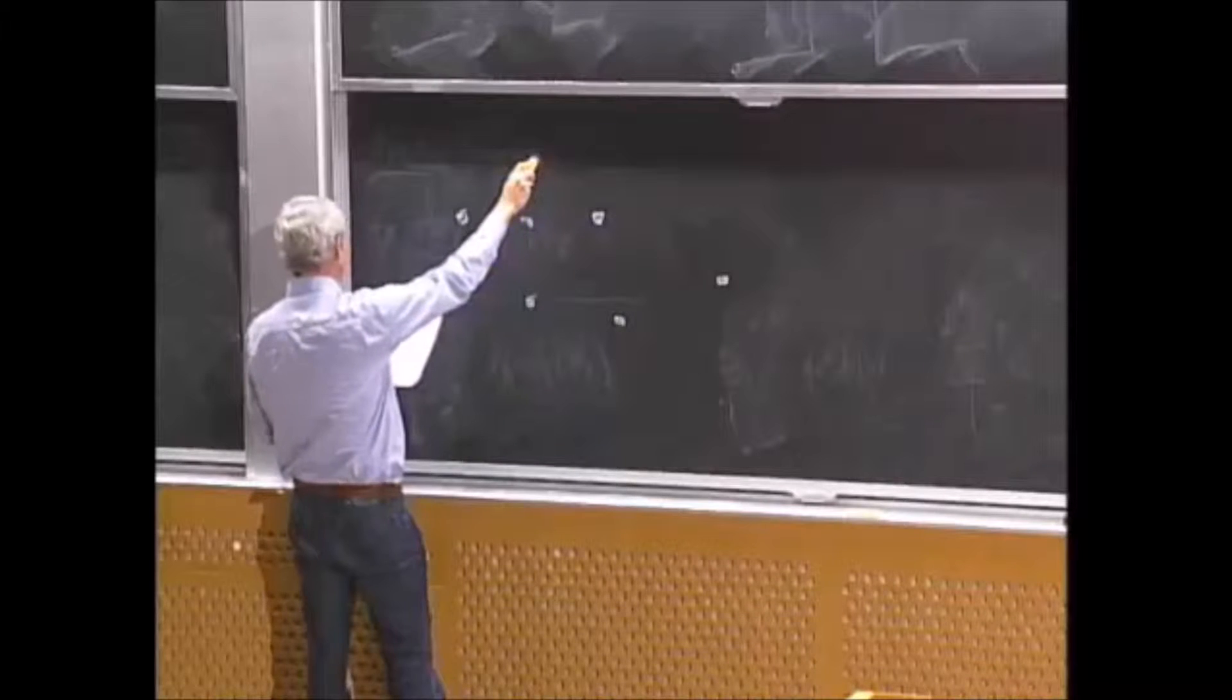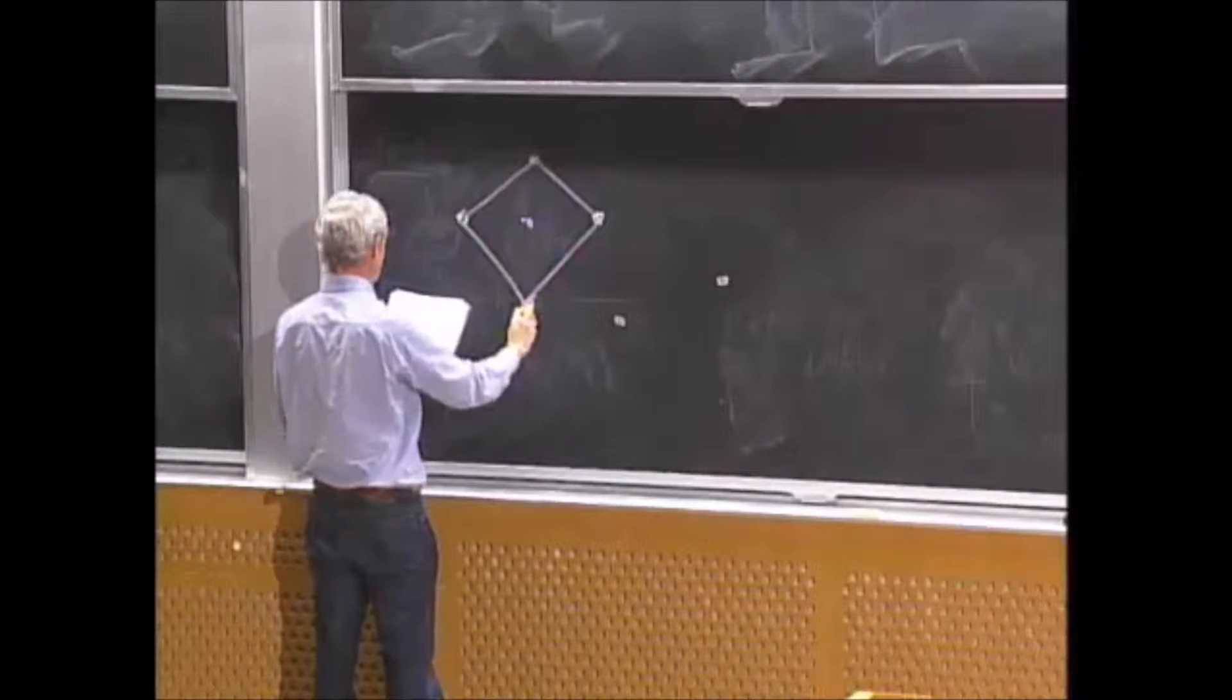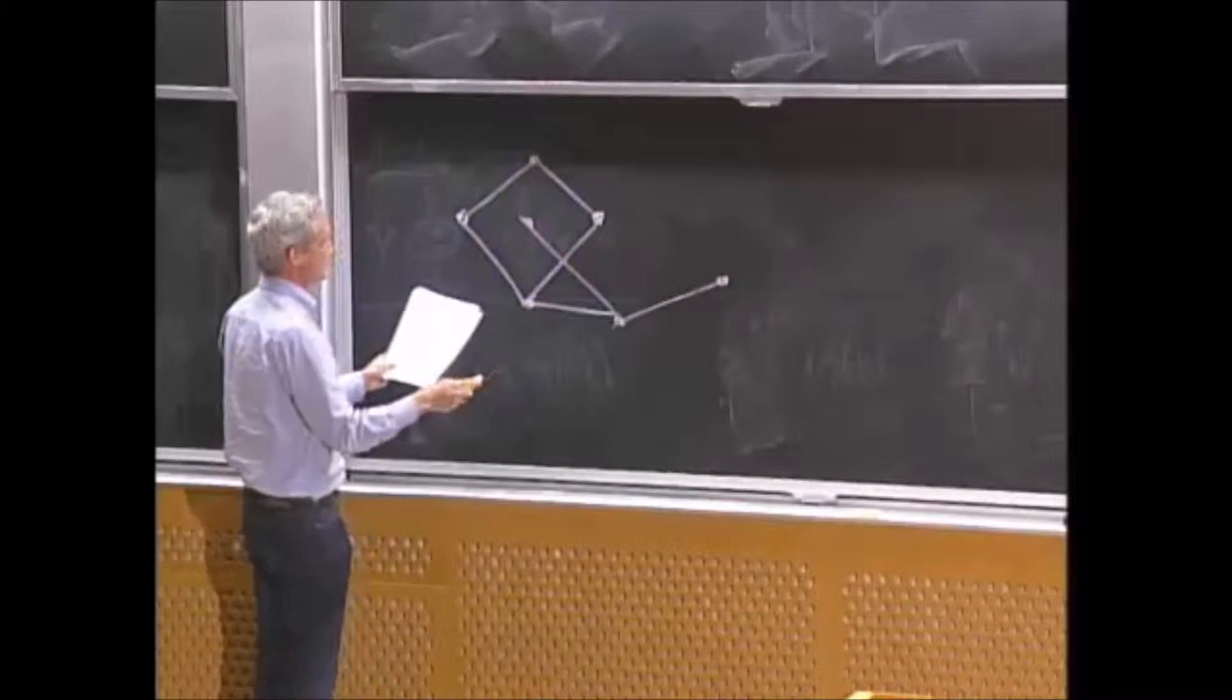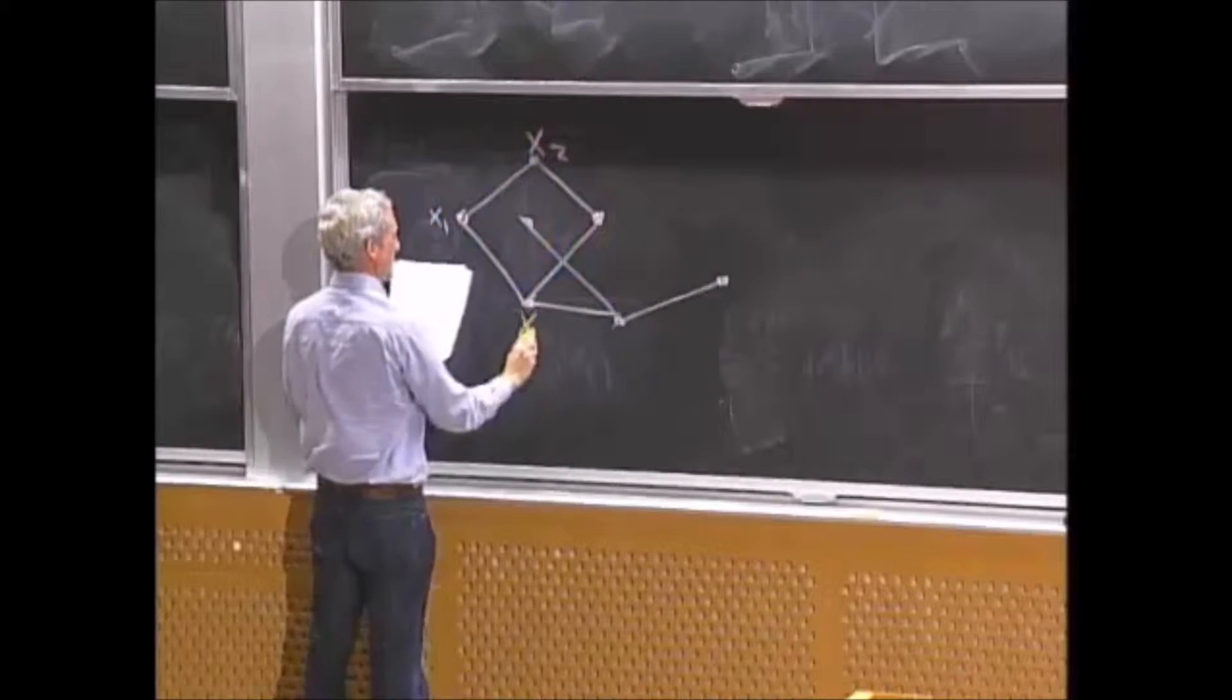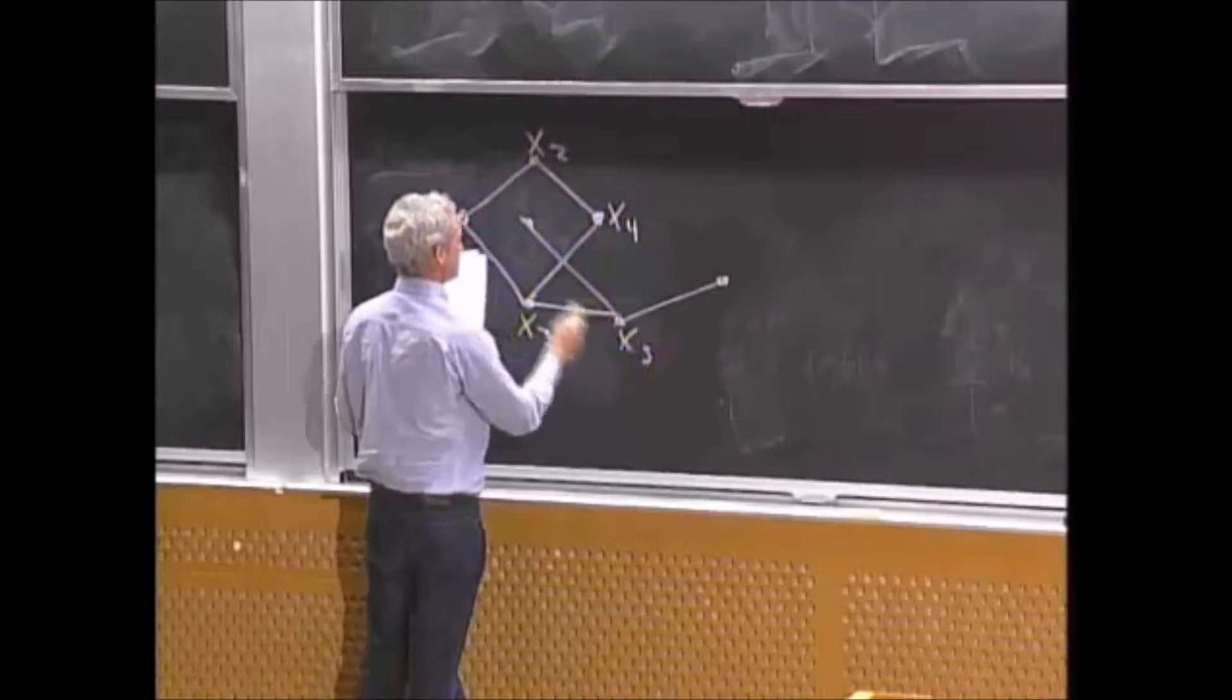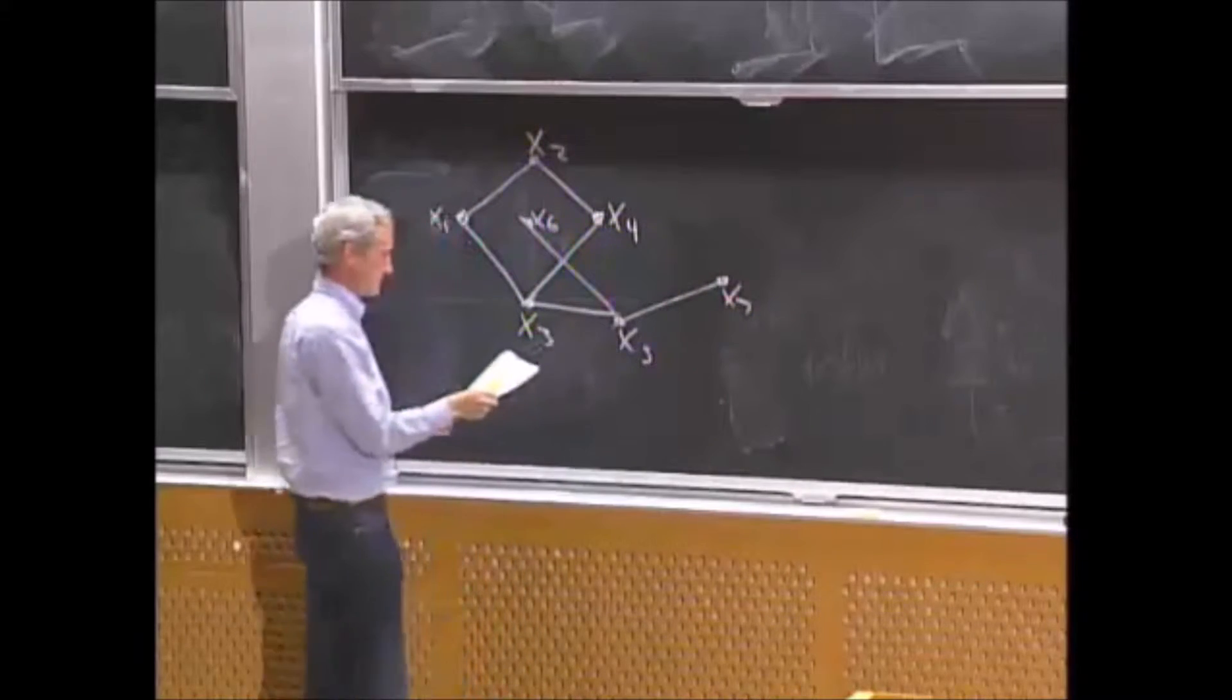These are the nodes, and they're connected with these lines that are called edges. And often the nodes, and sometimes the edges, are labeled. For example, we might call this x1, x2, x3, x4, x5, x6, and x7. That's an example of a graph.